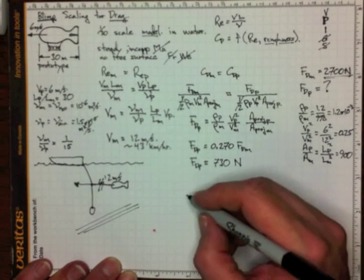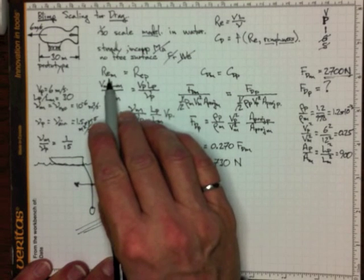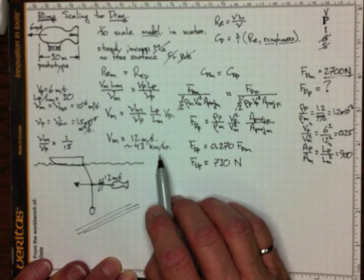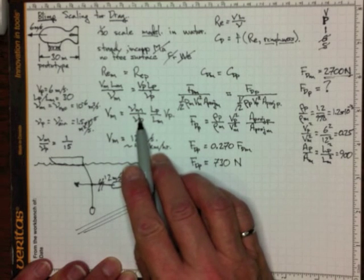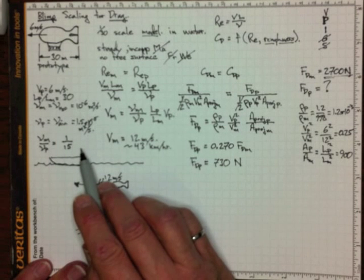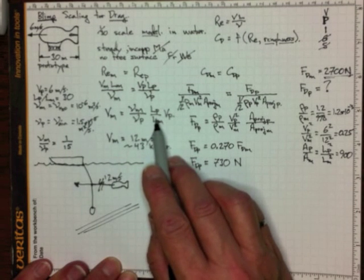If we tried to test it in air and we wanted to have the Reynolds number of the model equal to the Reynolds number of the prototype, then we would have had no factor of 15 here for the difference in viscosities. In that case, we'd have to have 30 times higher velocity.